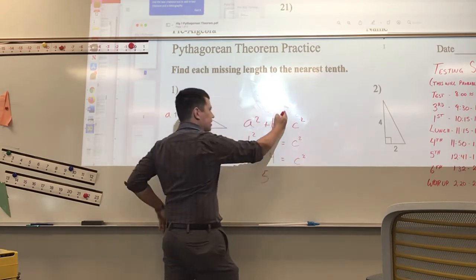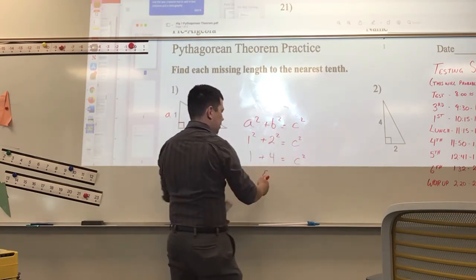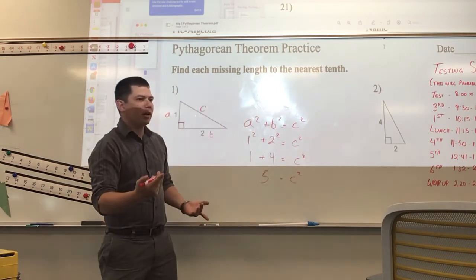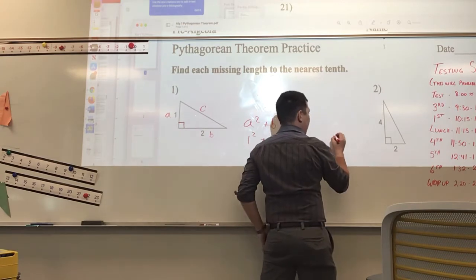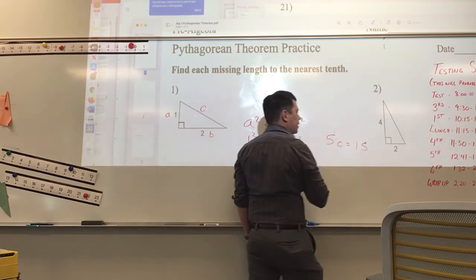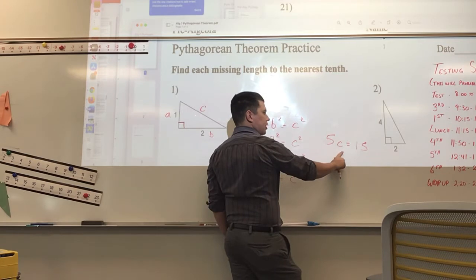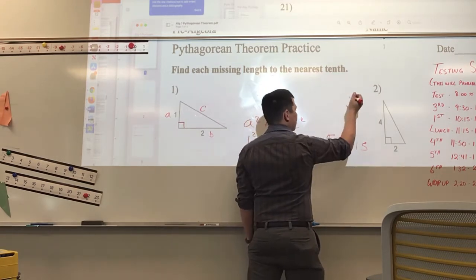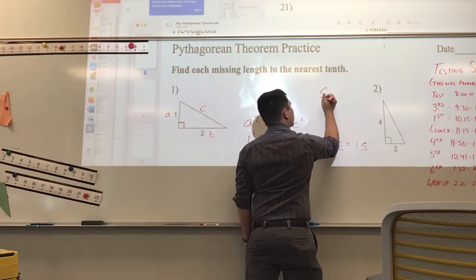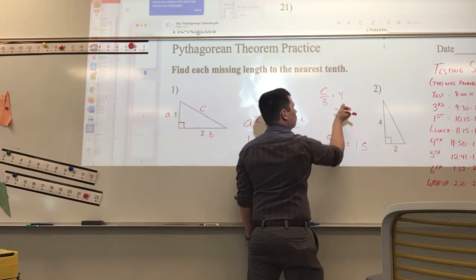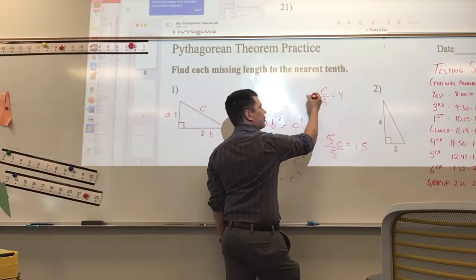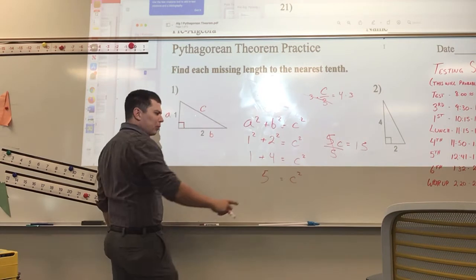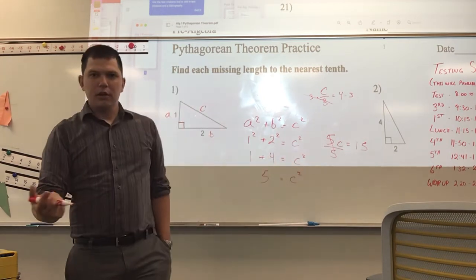All we've done is simplify this expression. Now, we know how to get C by itself. If it was 5 times C equals 15, we would divide by 5 — you do the opposite. If it was C over 3 equals 4, we multiply by 3 to get rid of it. What about when it's C squared? How do we get rid of a squared?